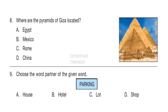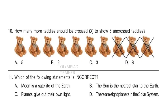Question 9: Choose the word partner of the given word. Answer is option C — Lot. Parking lot. Question 10: How many more teddies should be crossed to show 5 uncrossed teddies? To show 5 uncrossed teddies, you have to cross 2 more teddies. So option B — 2 is the correct answer.